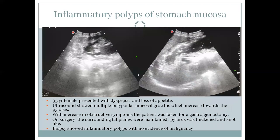A 35-year-old female patient with dyspepsia and weight loss was evaluated. Ultrasound showed multiple polypoid growths which increased towards the pylorus. The patient subsequently worsened in symptoms and was taken for gastric endoscopy. On surgery, the pylorus was resected and biopsy showed inflammatory polyps of the stomach.